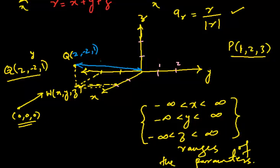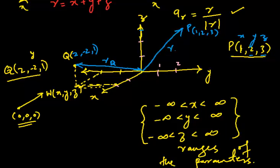We call this position vector r_Q. Now for another point P at (1, 2, 3): we go to level three in z, level two in y, and level one in x. So point P is at (1, 2, 3) and the position vector goes from the origin to that point — we call this r_P.